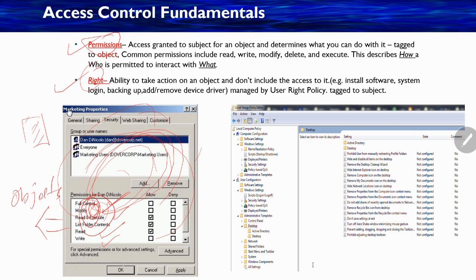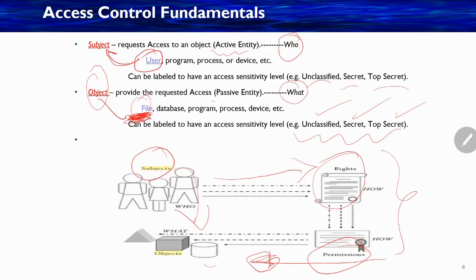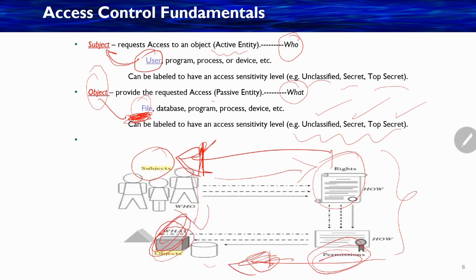Whenever you right-click in Windows and go to permissions, you go to the Security tab and get a window regarding the permission configuration. Rights, by contrast, are tagged to the subject — meaning the user. So: permissions are tagged to objects, and rights are tagged to users.